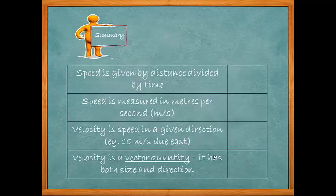Let's just summarize. Hopefully you now know these. Speed is given by distance divided by time. Speed is measured in metres per second. Velocity is speed in a given direction, e.g. 10 metres per second due east.